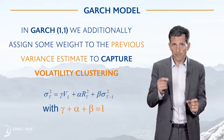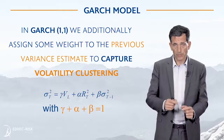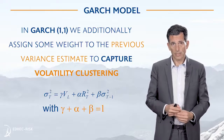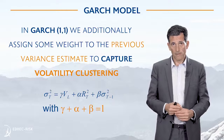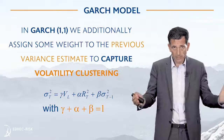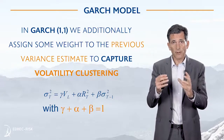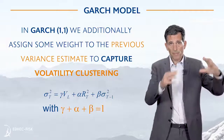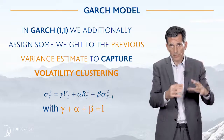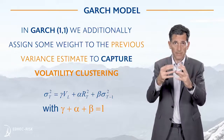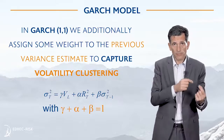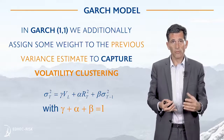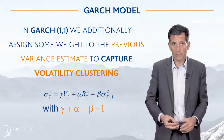The reason it is useful to introduce the previous volatility estimate is because of an empirical regularity in time-varying volatility: there is volatility clustering. Volatility doesn't move in a totally erratic way — there are periods of high volatility followed by periods of lower volatility, and these periods tend to cluster together. By introducing the last volatility estimate, we capture this clustering effect, doing justice to what we find empirically in the data.